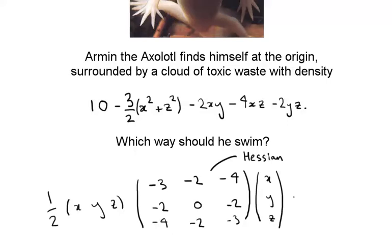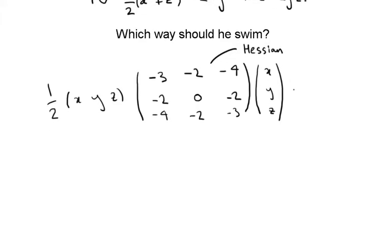Now, if we want to find out what direction he should swim in, it should be the direction of greatest decrease of this quadratic function. So that is to say, if we found the eigenvectors of this matrix, then he should be swimming in the direction of the eigenvector with the biggest negative eigenvalue.